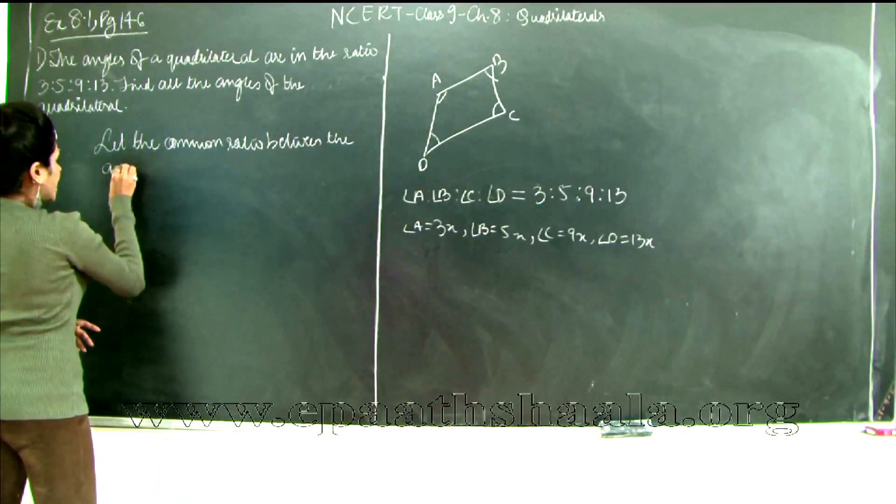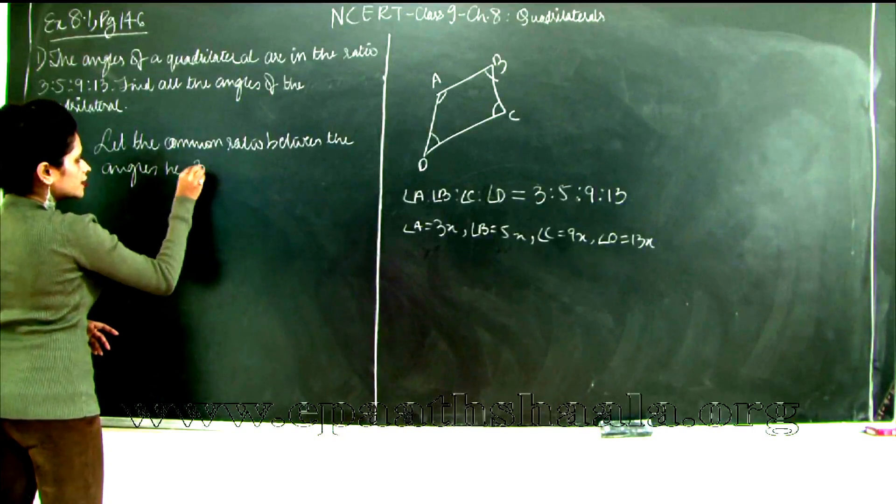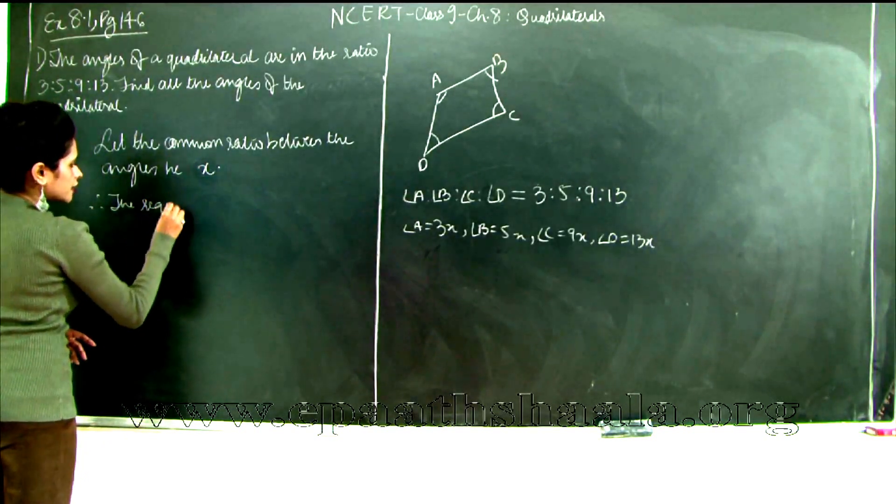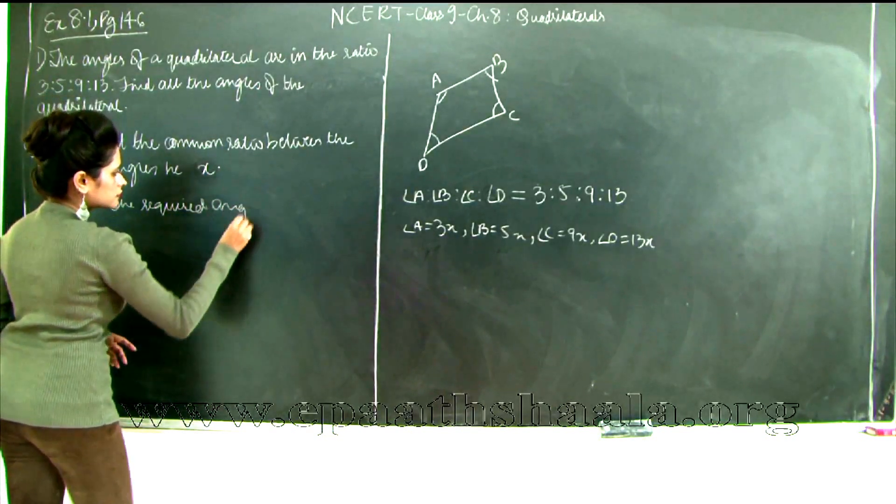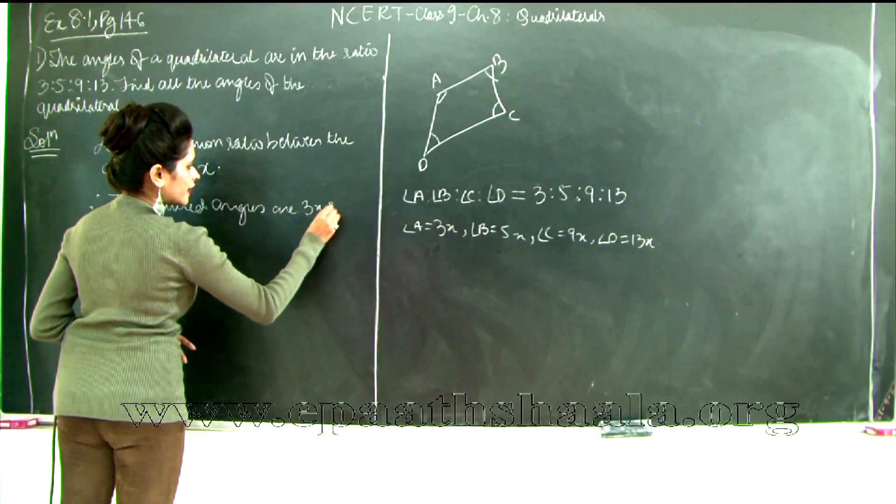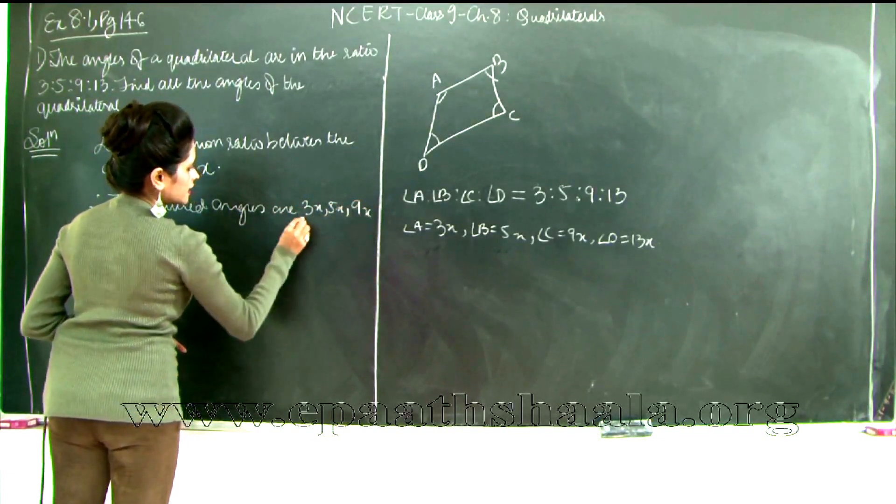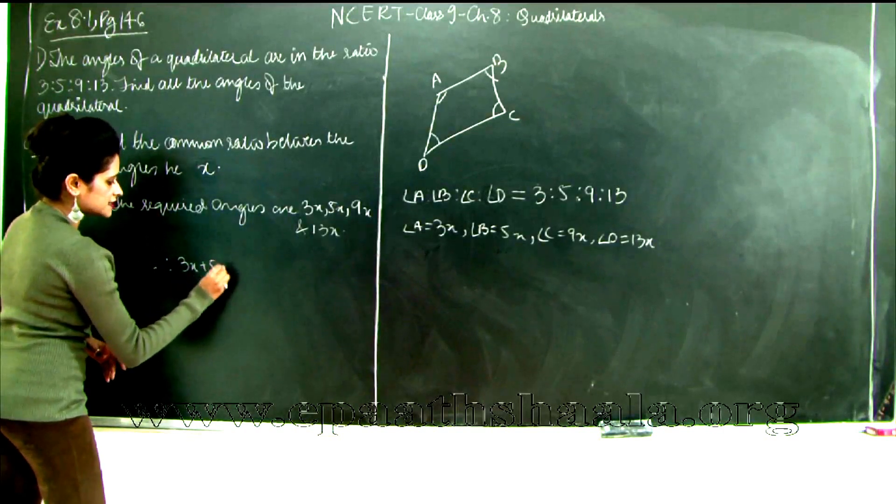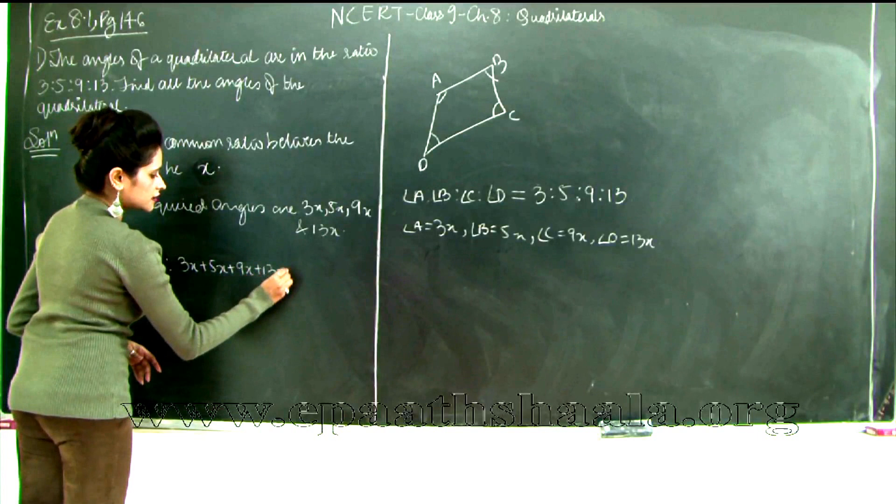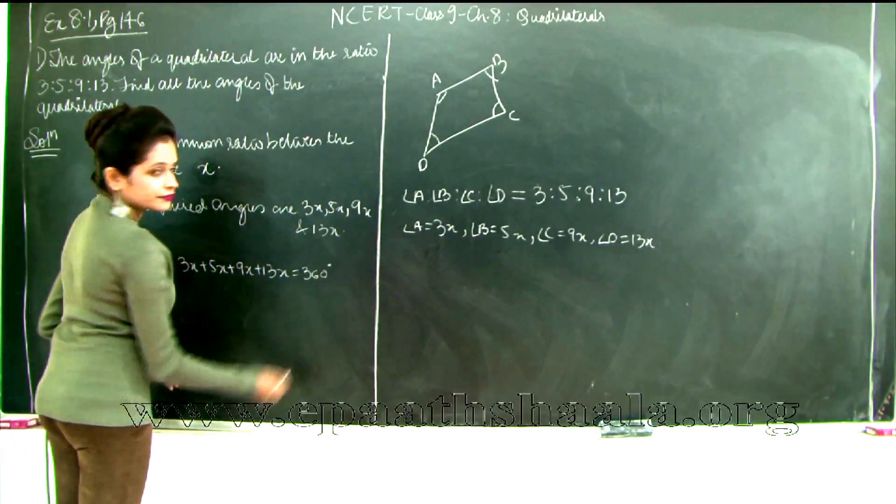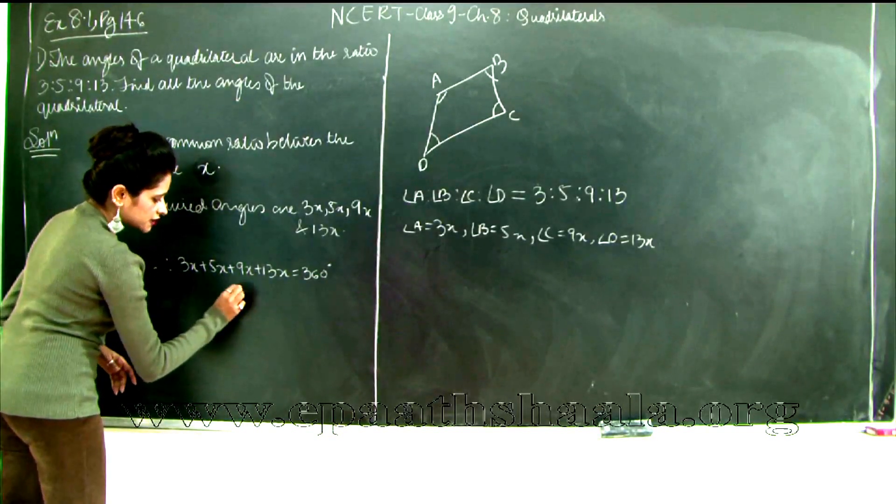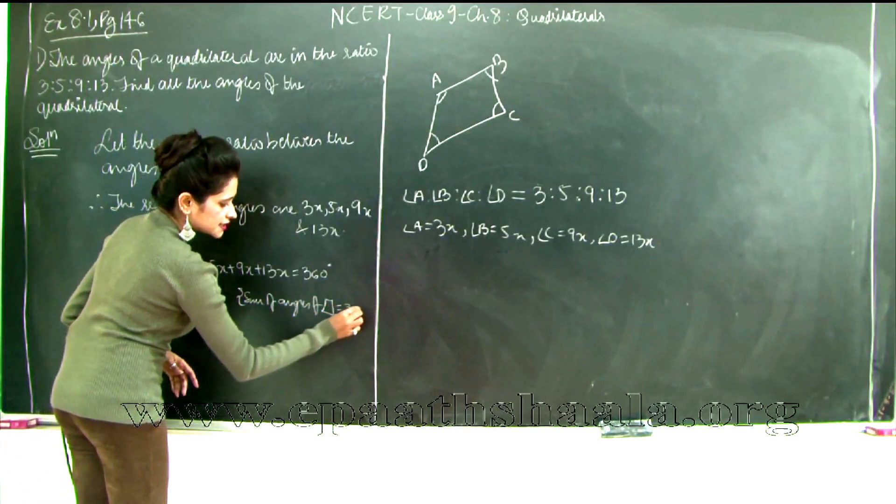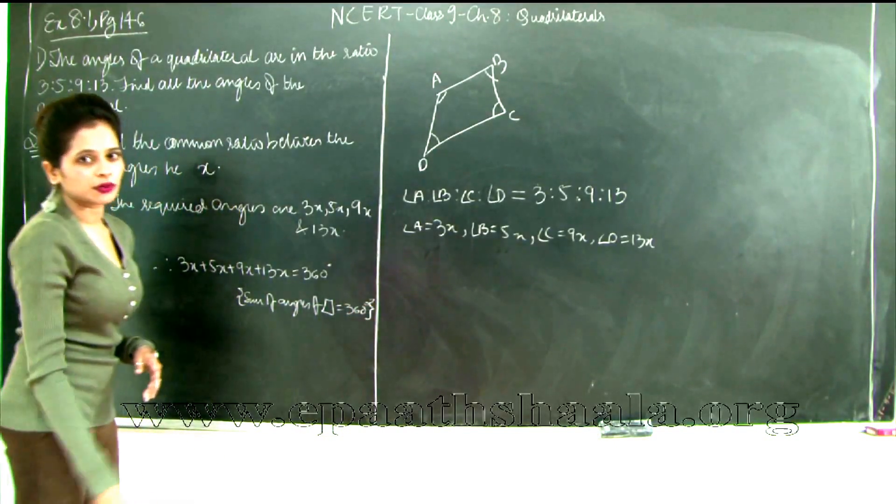Therefore the required angles are 3x, 5x, 9x and 13x. Therefore I get 3x plus 5x plus 9x plus 13x is equal to 360 degrees. And in brackets you will write sum of angles of quadrilateral is equal to 360 degrees. We know this. This was the first very first thing that we learned in our chapter.